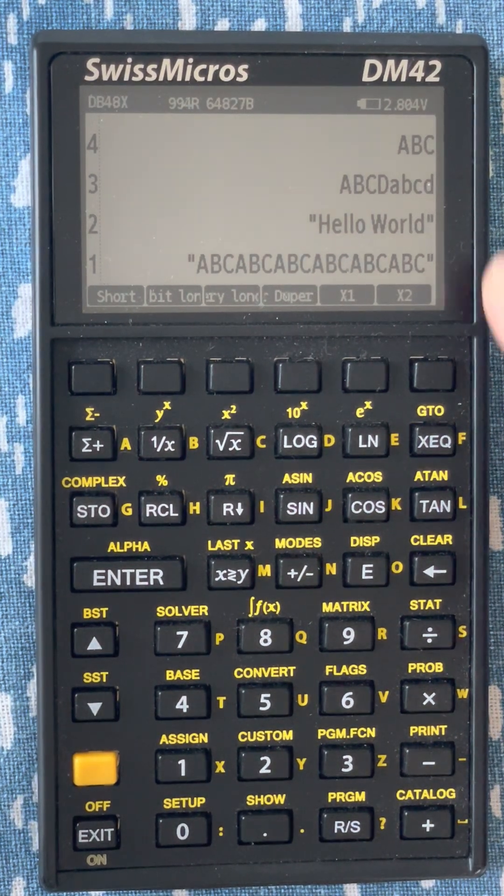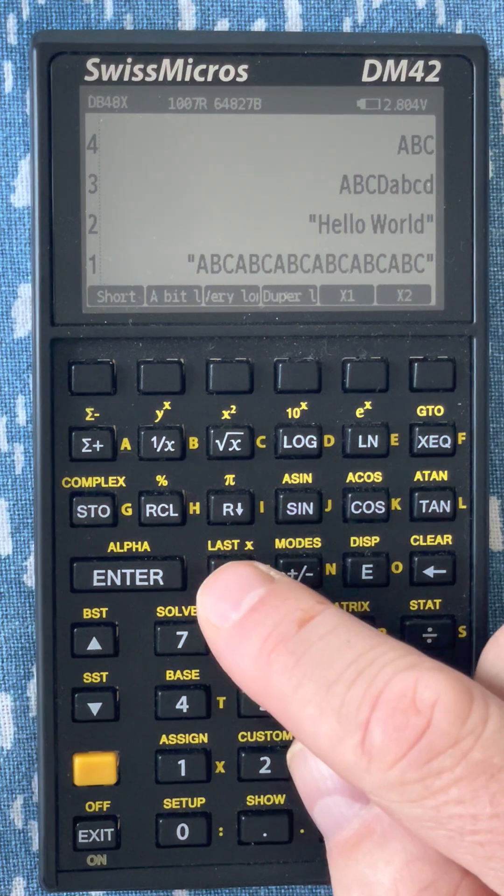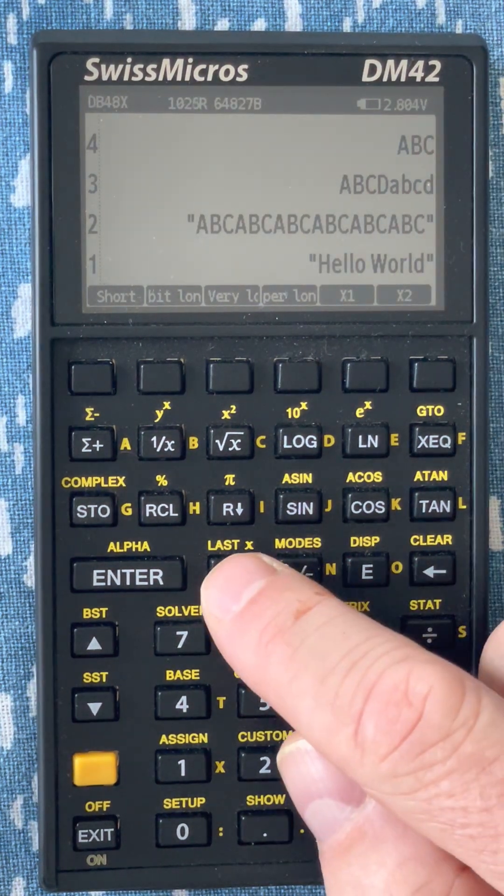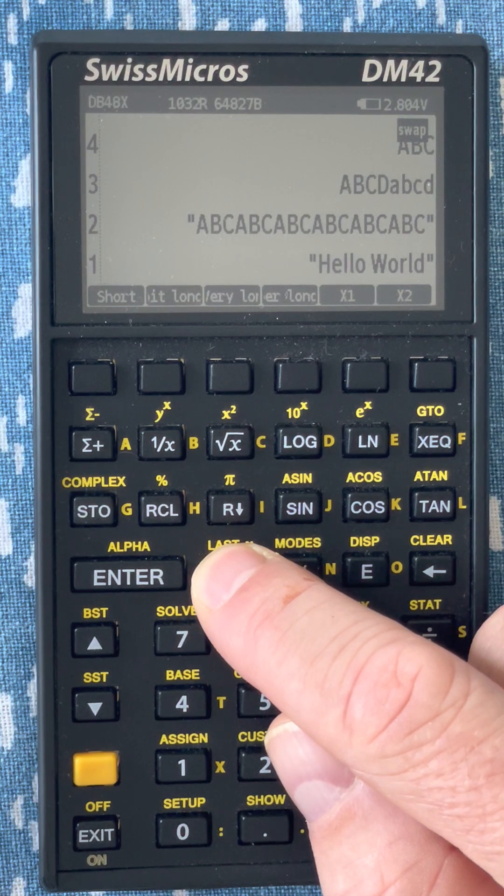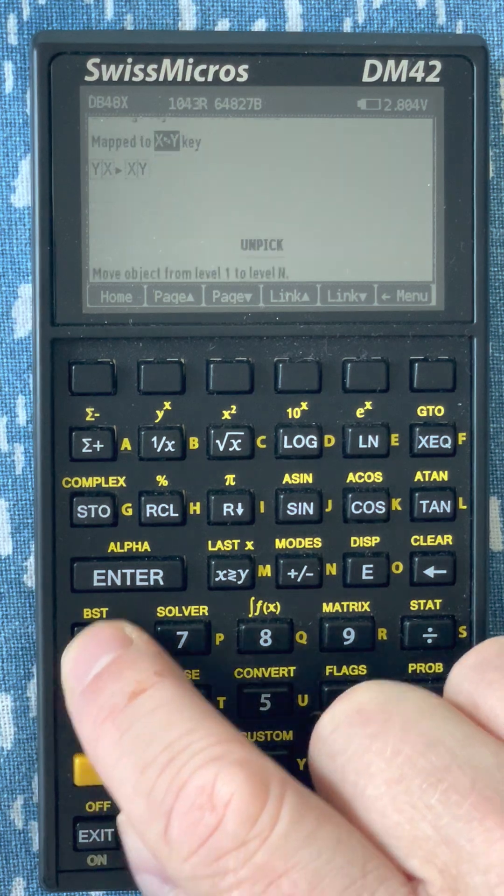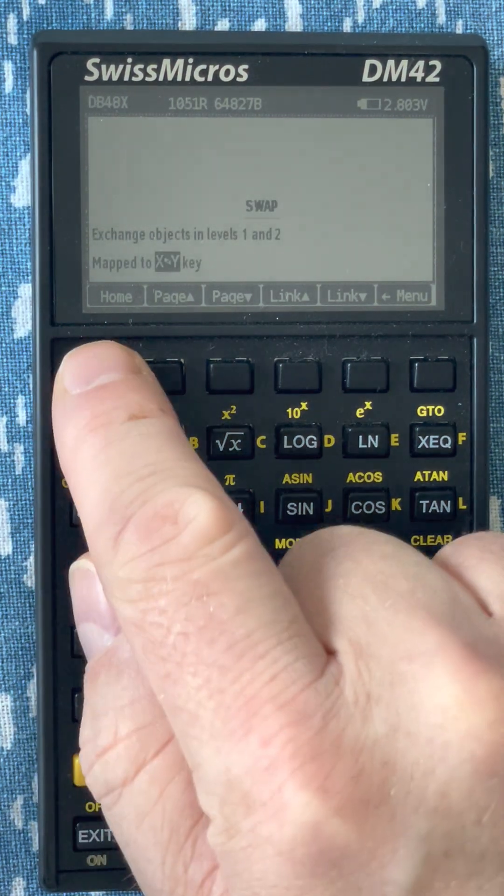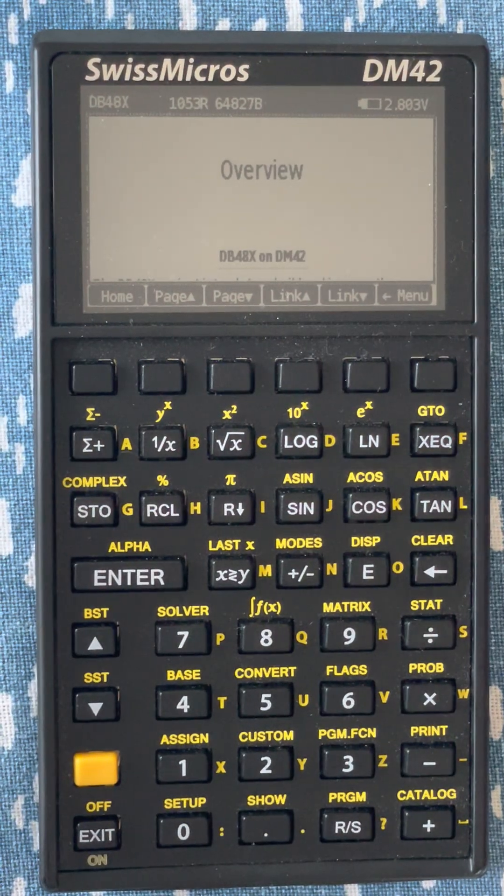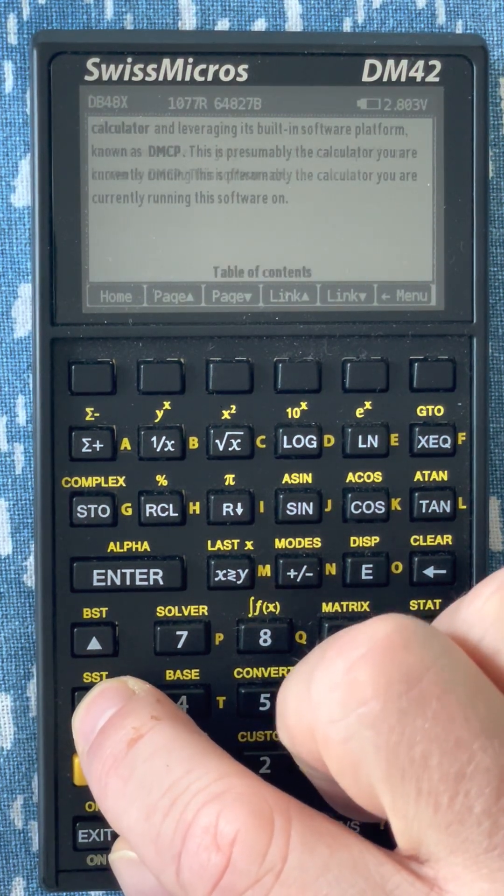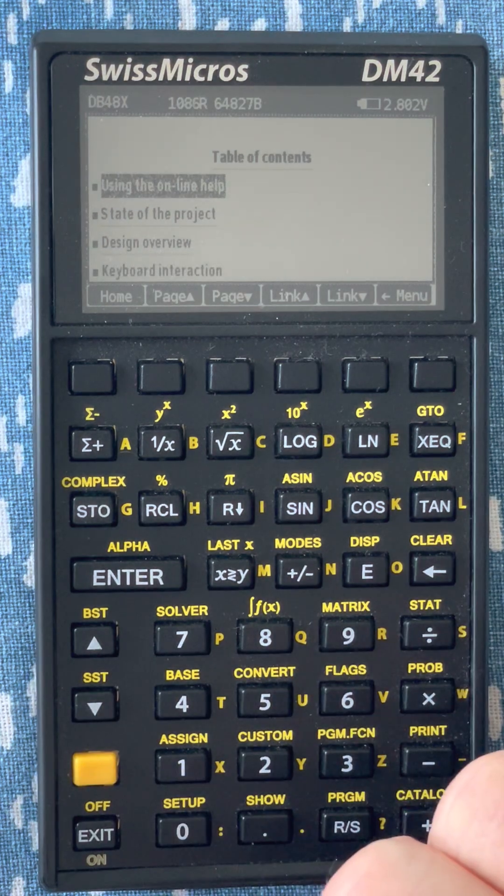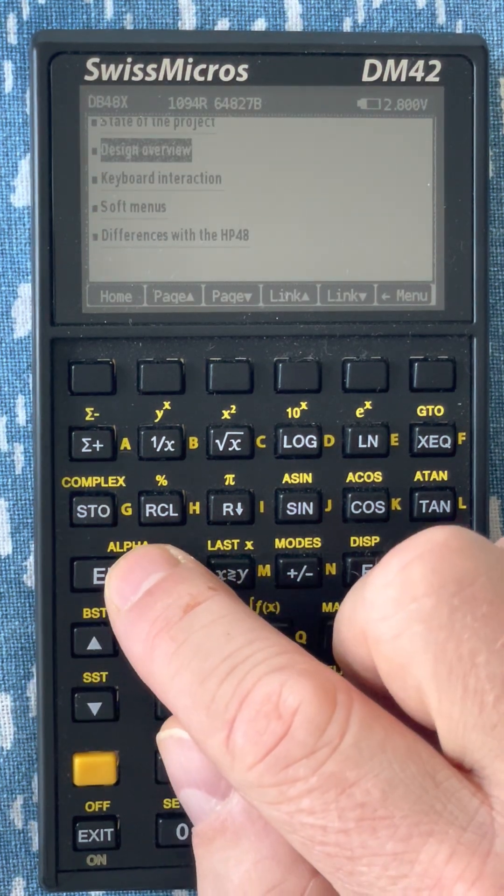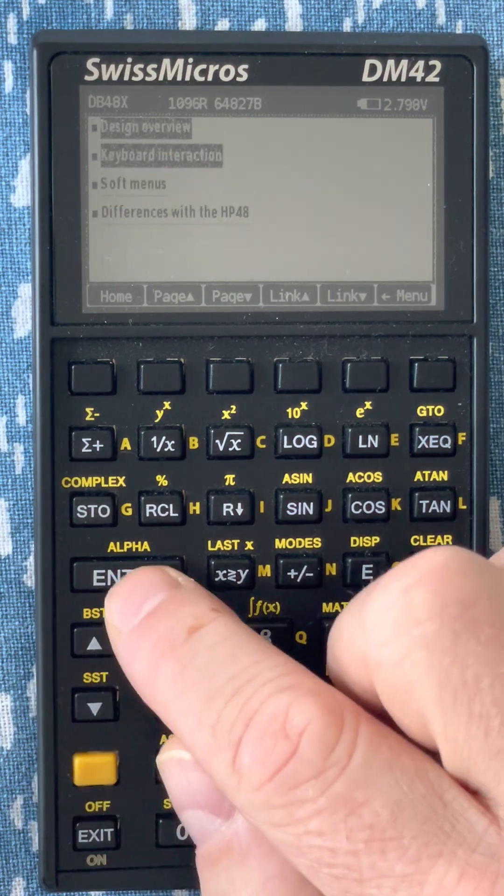Now, you may have noticed that when I do a command, like for instance swap, the name appears in the top right here. If I hold the key, then an online help for that command shows up. And there is a help index here that gives me the overview. And like the built-in DM42 help, this has hyperlinks. So I can follow, for instance, the keyboard interaction one.